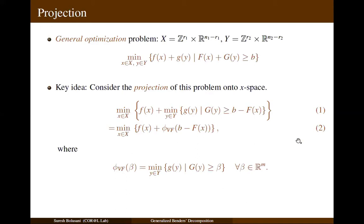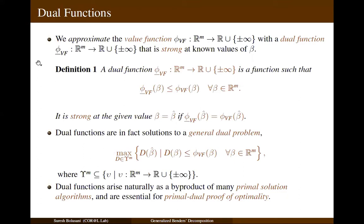Here, phi_Vf is the value function of an optimization problem. So, if we were to have the structure of phi_Vf, then we can solve the original problem by solving equation number 2. But that is usually not the case. So, we approximate the value function with a dual function phi_underscore_Vf that is strong at known values of the right-hand side vector. As defined here, a dual function is a function that bounds the value function from below.